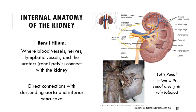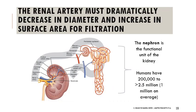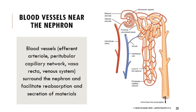There are direct connections with the descending aorta — the renal artery connects to the descending aorta and the renal vein connects to the inferior vena cava. These are major blood vessels closely connected to those entering and leaving the heart. As the renal artery brings blood in, it has to really decrease in diameter to get into individual glomeruli and increase surface area for filtration. That filtration happens at the relationship between the glomerulus and the nephron, specifically Bowman's capsule. Humans have anywhere from 200,000 to 2.5 million nephrons, about 1 million on average.